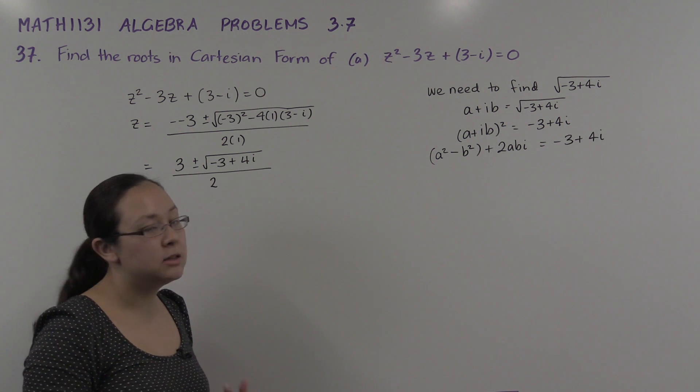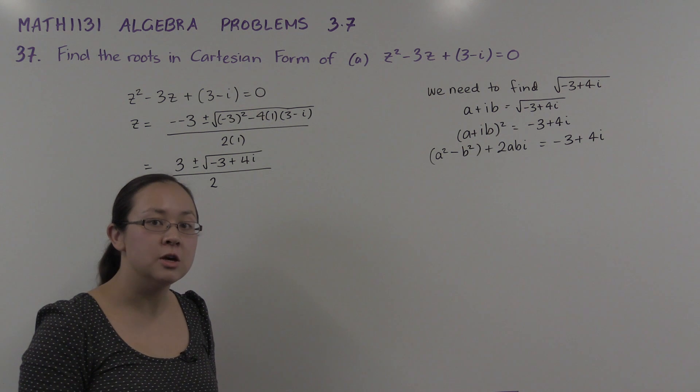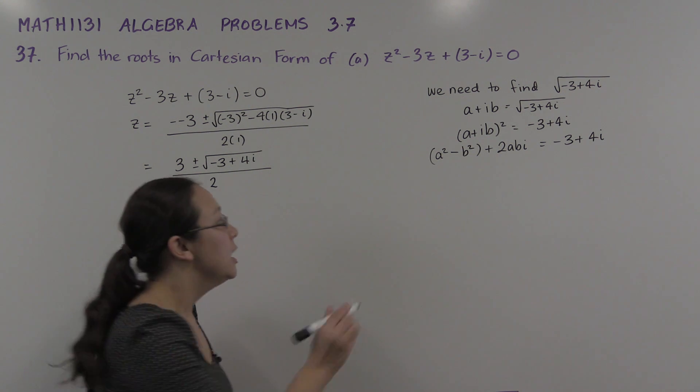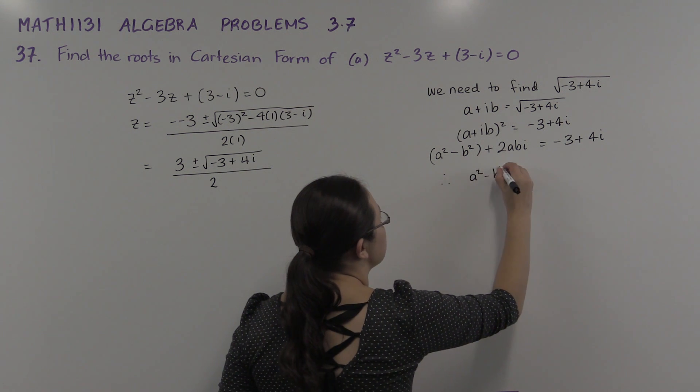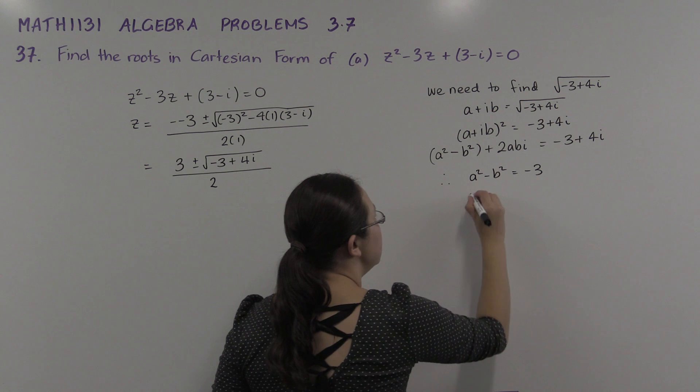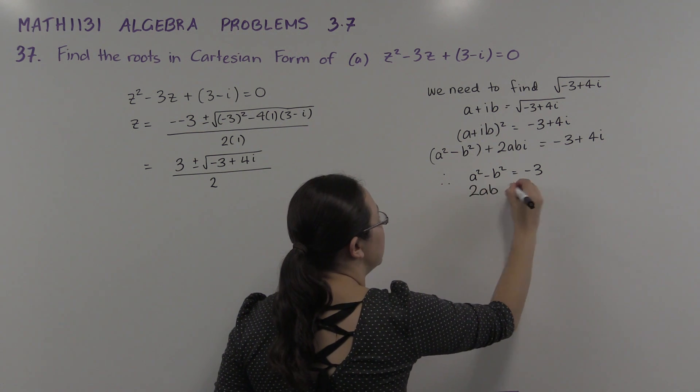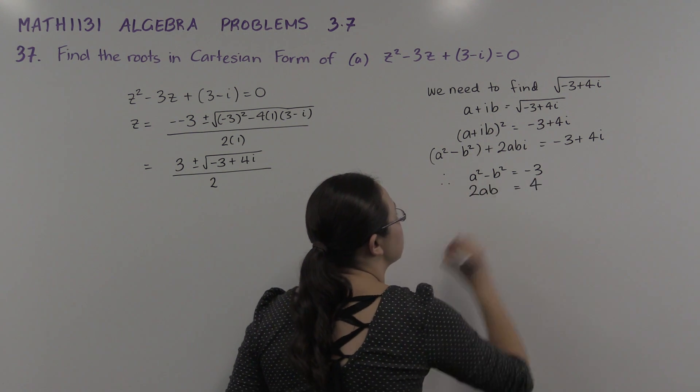So if I equate the real and imaginary parts, I'll get two equations with the two unknowns, a and b, and I can solve them. So we get a² - b² = -3 and we get 2ab = 4.